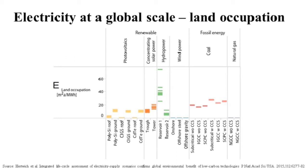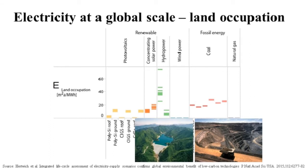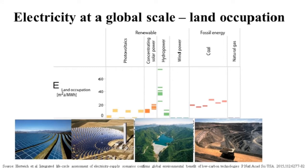Looking at land occupation — a key driver for ecological and biodiversity impacts — the same study found a very mixed picture. There's a big difference between coal and natural gas, mainly because of the nature of these fuels and the methods used to extract them. For example, open pit mining for coal can occupy a very large land surface. Among renewables, land use varies significantly — from minimal land use by wind power to significant land use by hydropower, which can sometimes even exceed that of coal due to large reservoirs. Solar power can also have very high land occupation if ground-mounted systems are used.